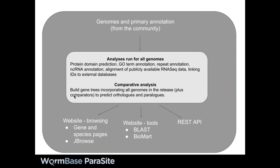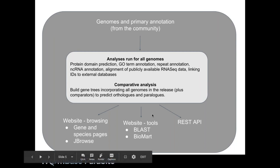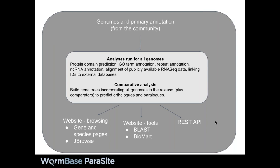Users can interact with all of that data in a variety of ways: firstly through browsing the website, looking at gene pages and species pages, and using the genome browser JBrowse. We also offer a number of tools through the website — we have a BLAST server, and we'll talk in more detail later about BioMart. All the data can also be queried programmatically via the REST API, which we won't cover today, but you can always email the help desk.